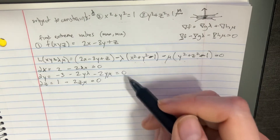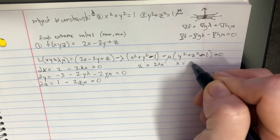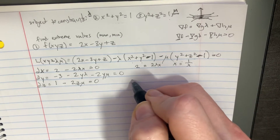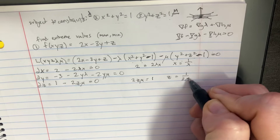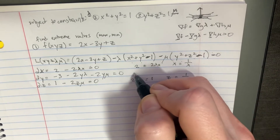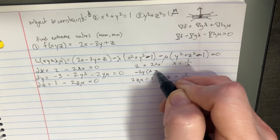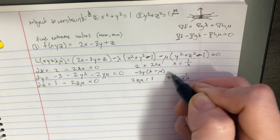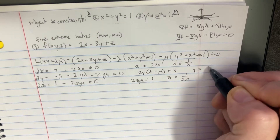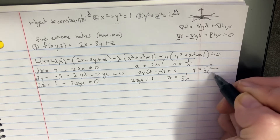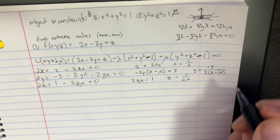Now we can rearrange these equations. From the first: 2 = 2λx, therefore x = 1/λ. From the third: 2zμ = 1, so z = 1/(2μ). And from the second, we have negative 2y times (λ + μ) equals negative 3, so y = negative 3 over 2(λ + μ). That could work.